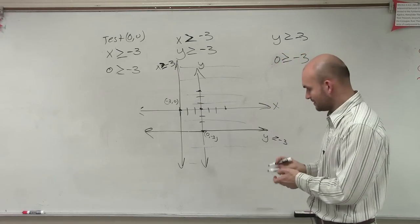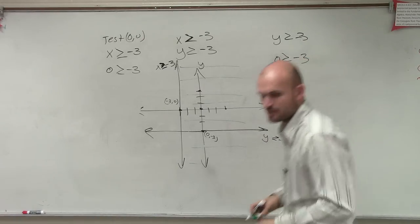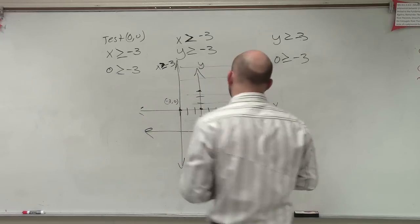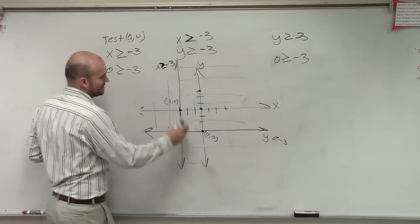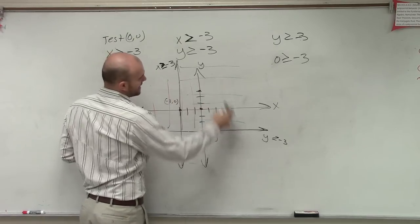True, right? So what that means now, did I read my red? Here's my red. That means all points, since this point is true for this line, that means all points above the line of this line are true.